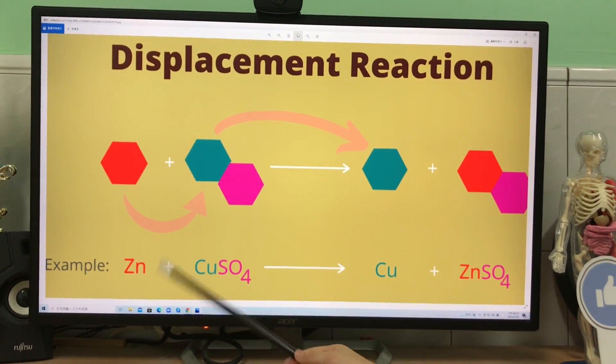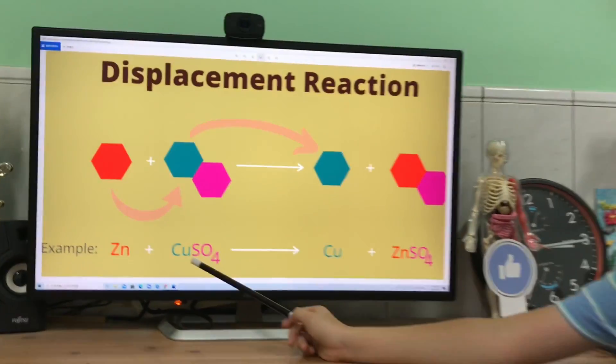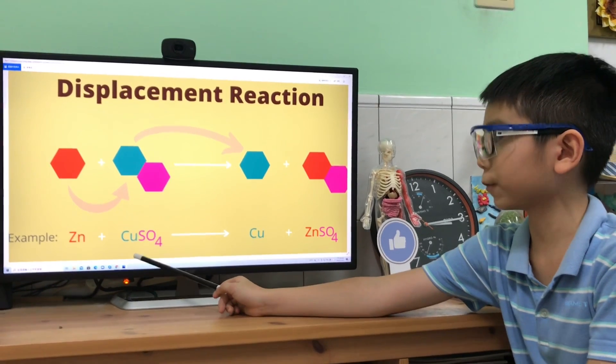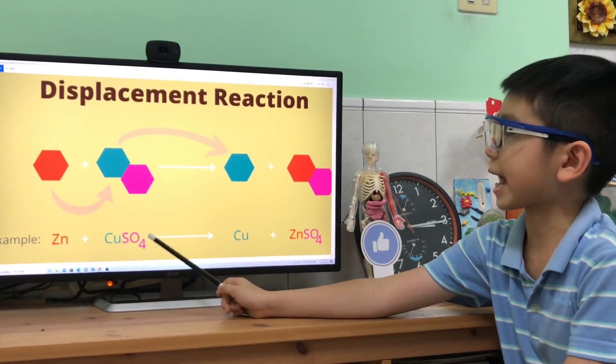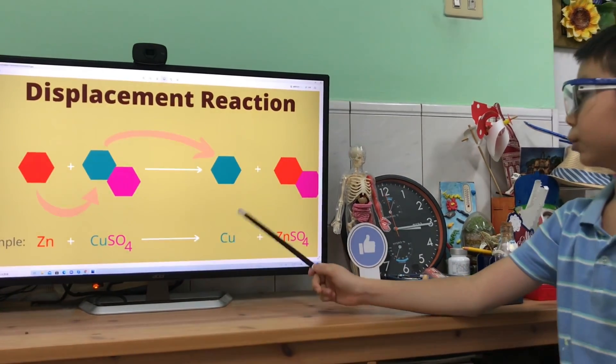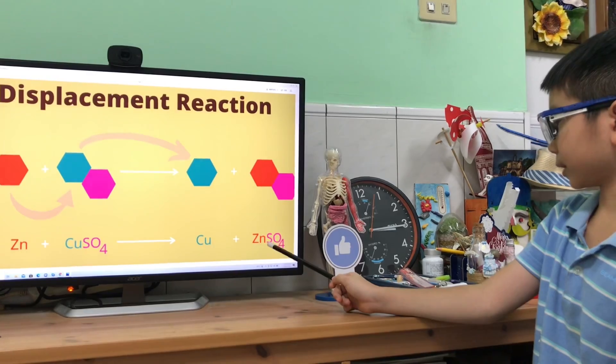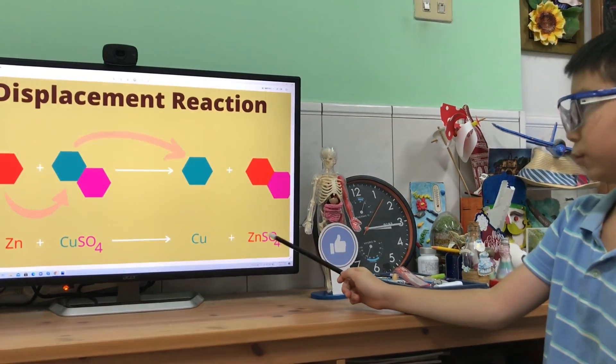It will turn into copper plus zinc sulfate. So all of these elements: copper, Cu, S which is sulfur, O which is oxygen which has four atoms here. Now it will turn into copper and zinc sulfate. Zinc, sulfur, oxygen, four.